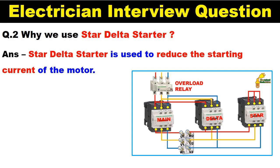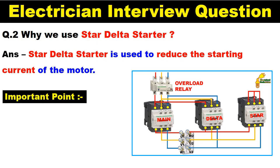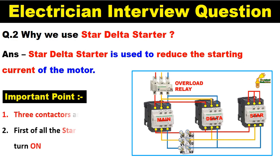You must also know some more things regarding this. In a star delta starter, three contactors are used: one main contactor, one delta contactor, and one star contactor. When we turn on the motor, first of all the star contactor gets turned on.